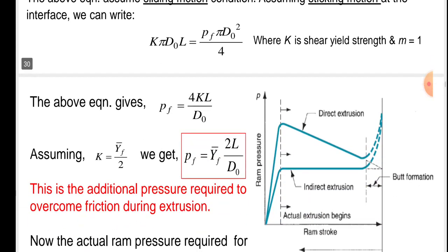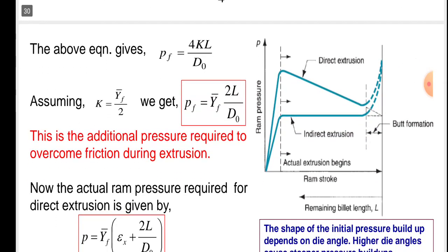The above equation gives pf equals 4KL upon D0. Assuming K equals Y̅f upon 2, we get pf equals Y̅f into 2L upon D0. This is shown in the graph which is given in the figure.